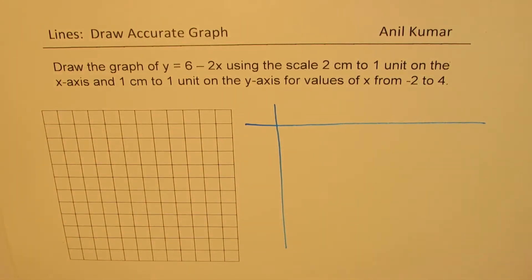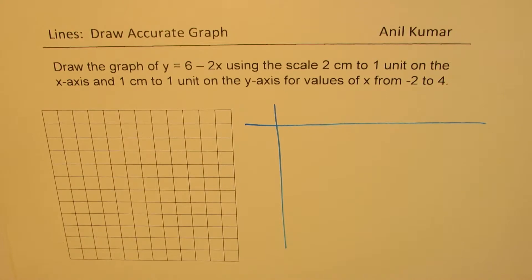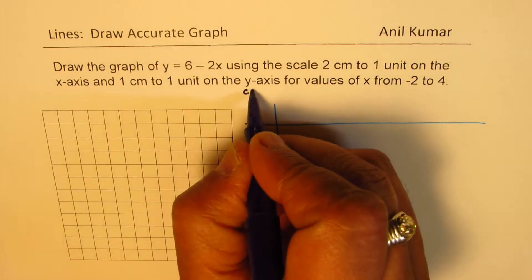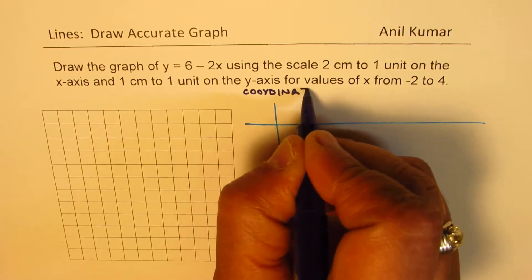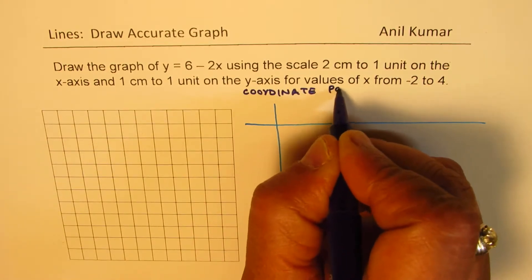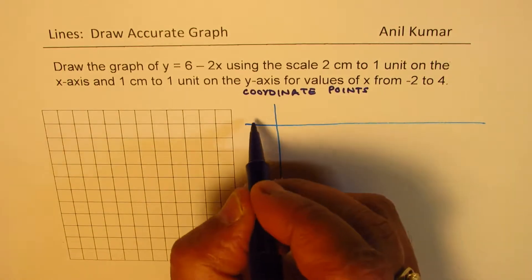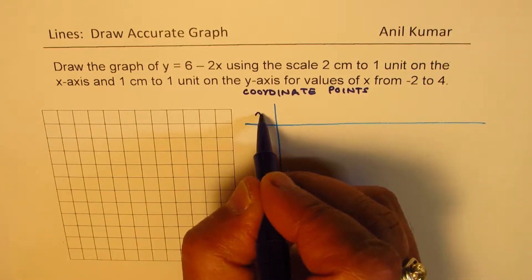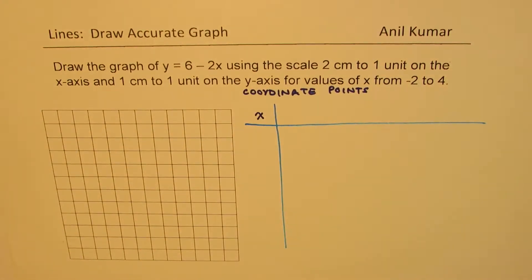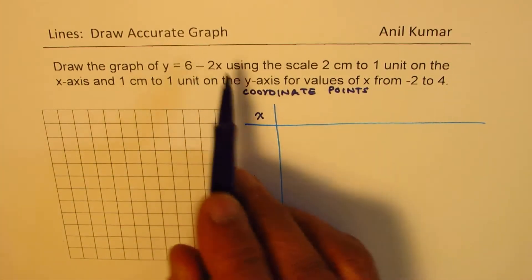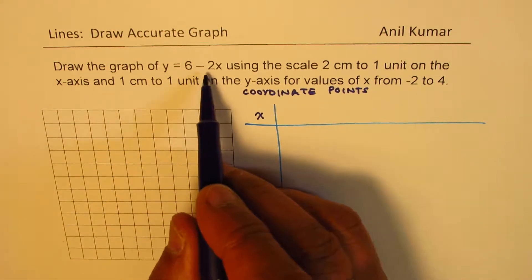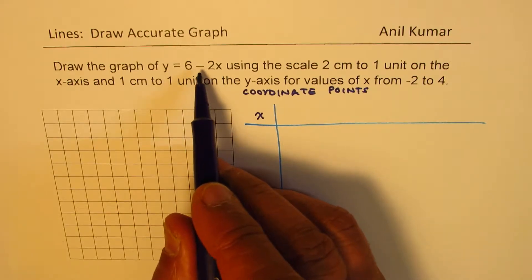So first step here is to find coordinate points. So we'll take different values of x and for each value of x, we'll apply the formula which is 6 minus 2x. So for different values, we know 6 is a constant. So we'll do minus 2x and then we'll use 6.